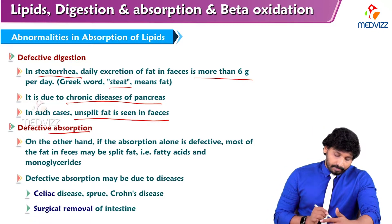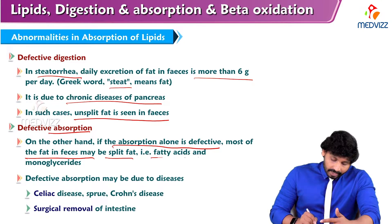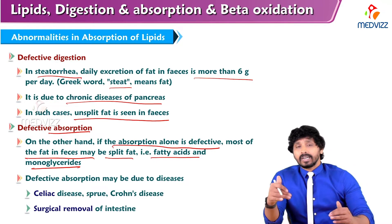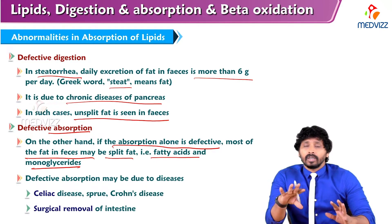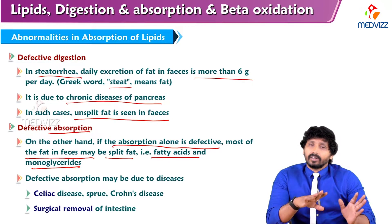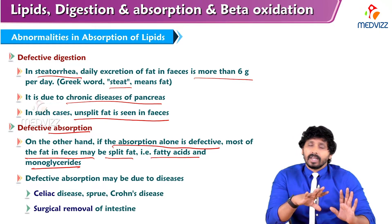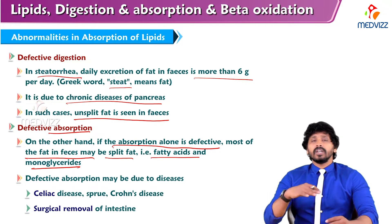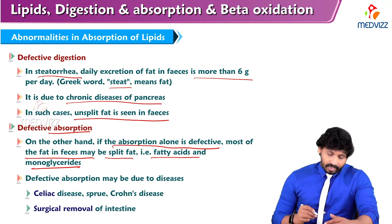On the other hand, if the absorption alone is defective, most of the fat in the feces may be split fat — that is, fatty acids and monoglycerides. The digestion part has been completed, but absorption at the intestinal level — at the duodenum and jejunum level — is defective. In this condition, split fat like monoglycerides and fatty acids will be seen in the fecal matter.